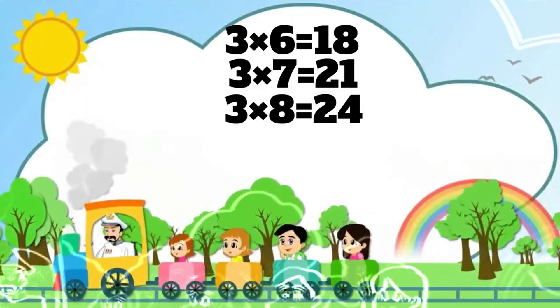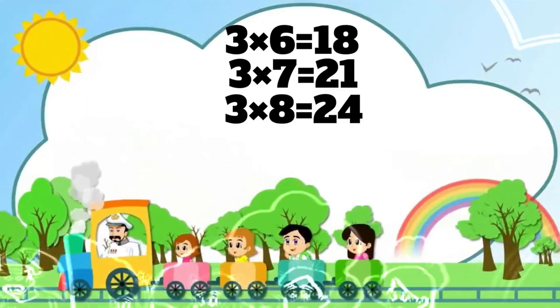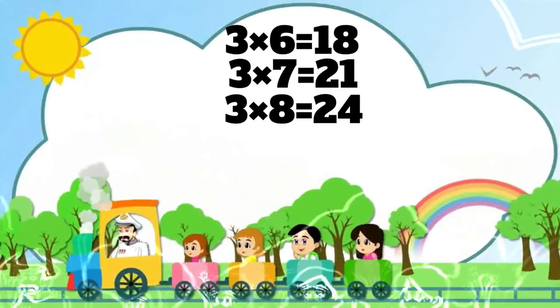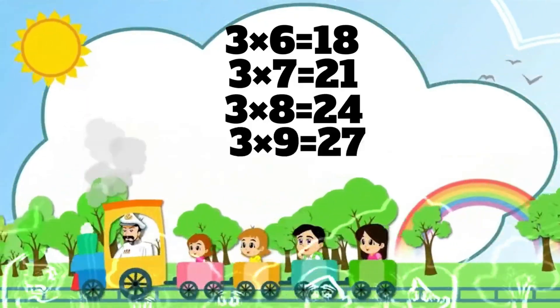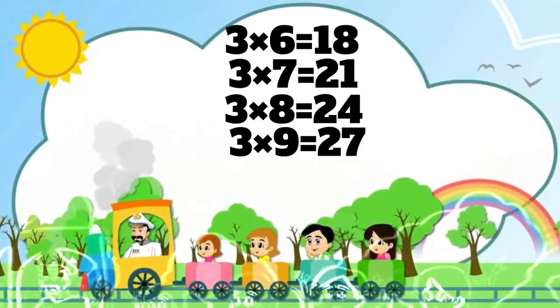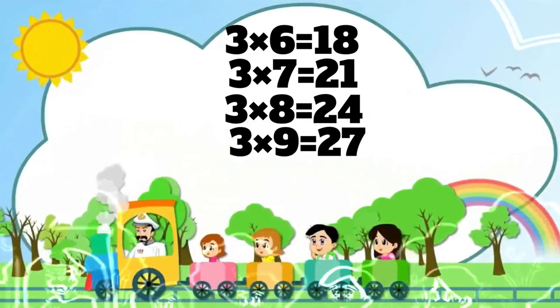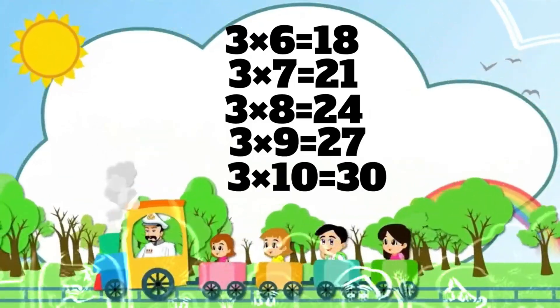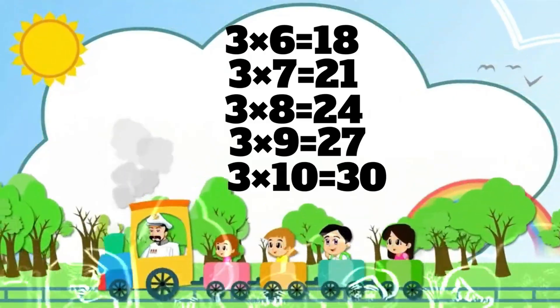Three eight's a twenty-four. Three nines a twenty-seven. Three ten's a thirty.